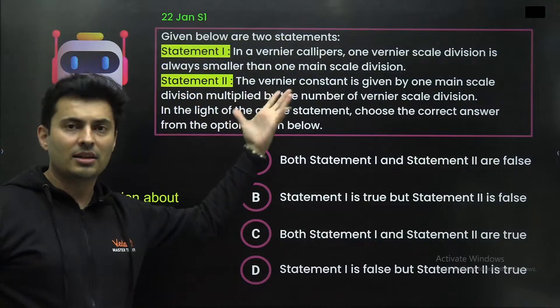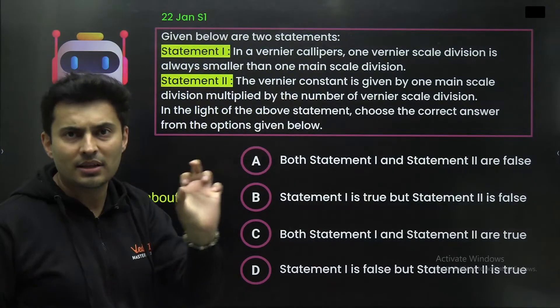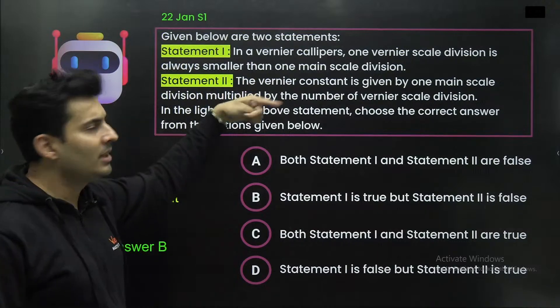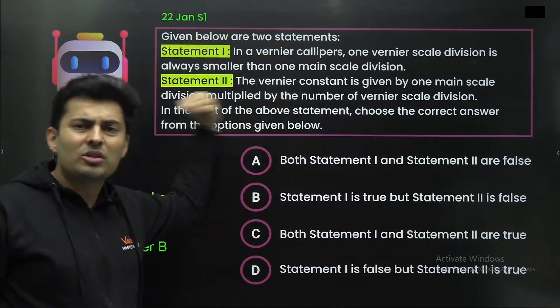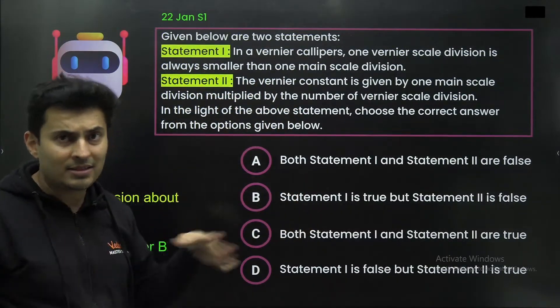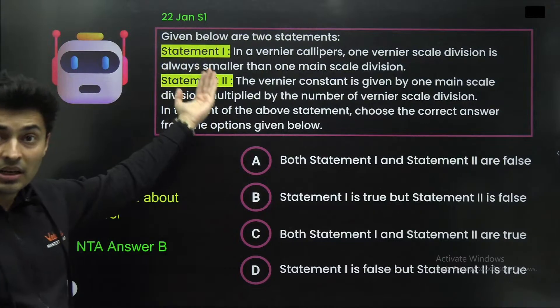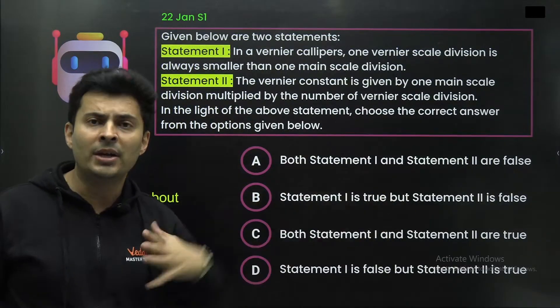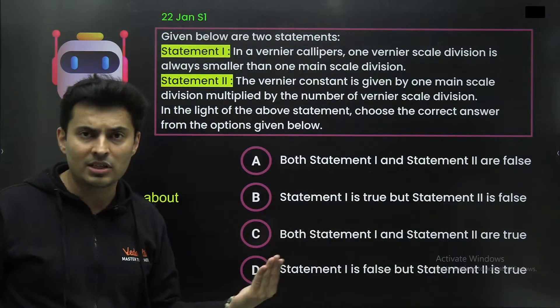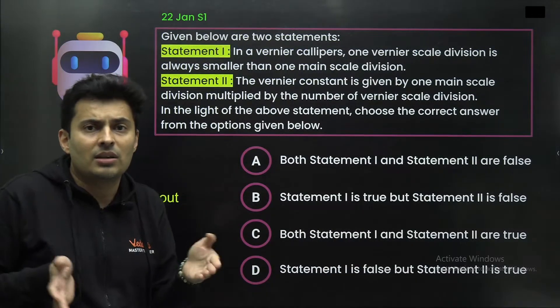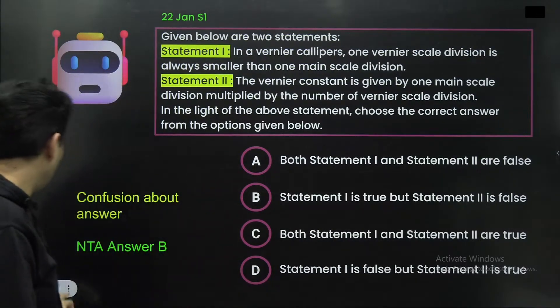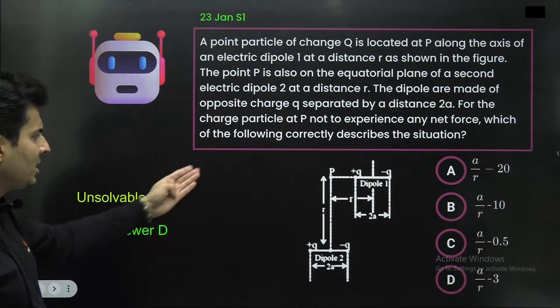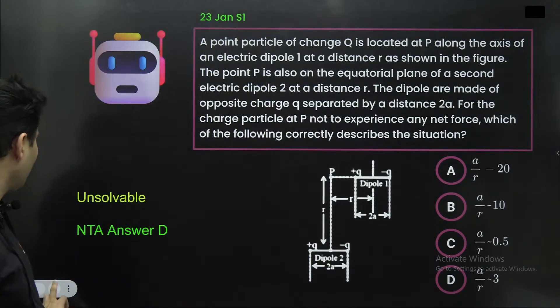As you can see, some questions are there in physics, like for example, this particular question, because as per industrial standards, usually the Vernier scale division is basically smaller than the main scale division. But when you solve problems, it can be more or less. Now, it needs to be seen whether they accept the industrial standard or the theoretical limit. Otherwise, there is no hard and fast rule. Even this question, the options, I think, were not matching here.